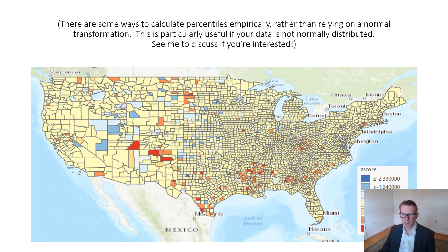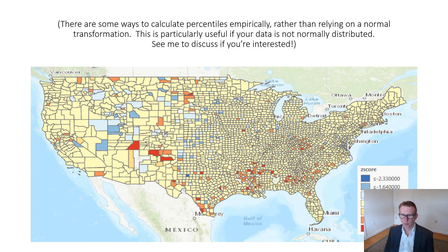You can calculate percentiles empirically by literally counting how many values are above and below you and dividing by the total — a direct measurement. But we often use the Z score-percentile approach, as long as our data is normally distributed. A lot of geographic data is not normally distributed, so it pays to be careful. You can always look at the histogram under the symbology tab to see how normally distributed your data is before taking this approach. Always check: is my data normal?